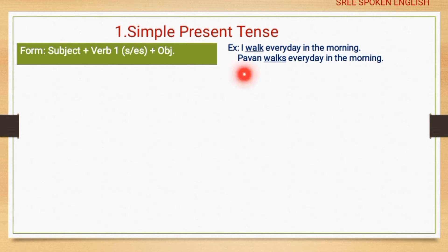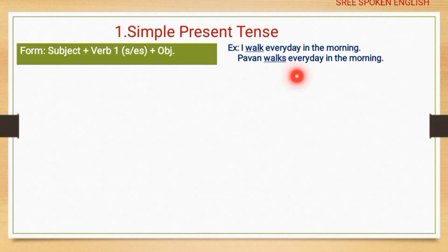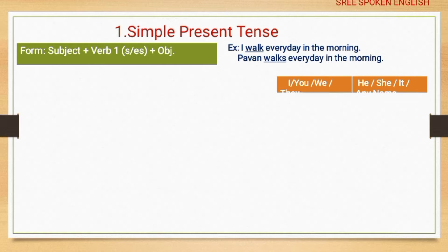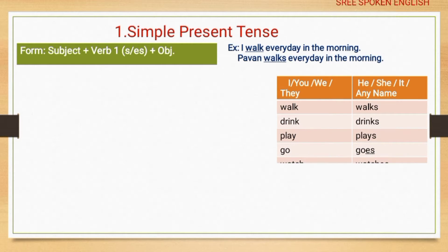Another example: 'Pavan walks every day in the morning.' In the second sentence, the verb takes -s because Pavan is a singular name. If the subject is singular, the verb takes -s or -es.